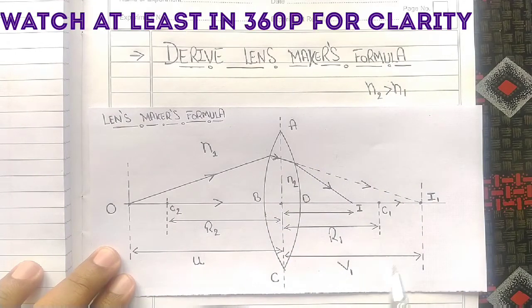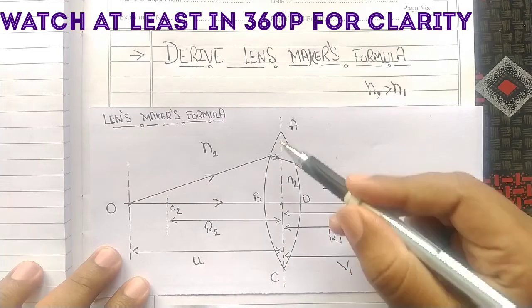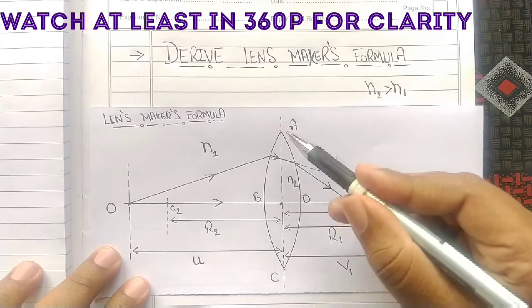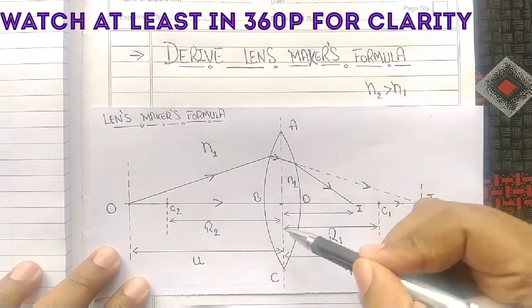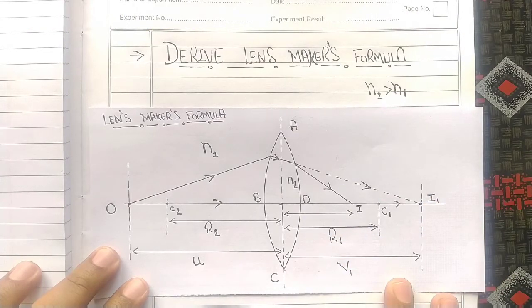Here you can see the diagram representation. This ABC and ADC represents the double convex lens. We are making the derivation based on the double convex lens.